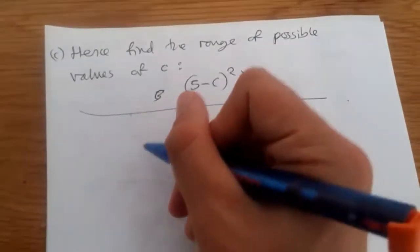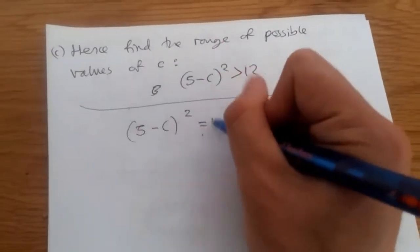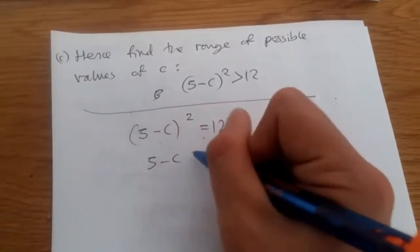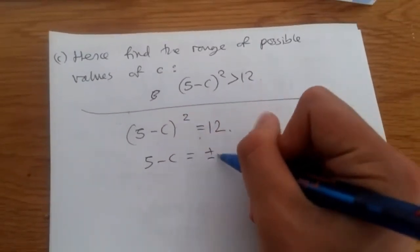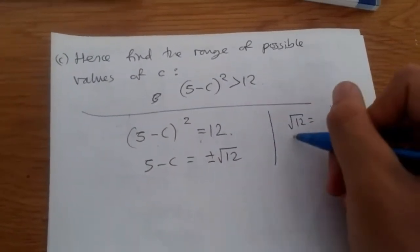So, using an equal sign, I would say, rewrite this as 5 minus c squared equals 12. So, now square root on both sides, you get 5 minus c equals plus or minus square root 12. Here, we could say square root 12 equals what? Well, breaking it down, we know 12 is made of 4 and 3.